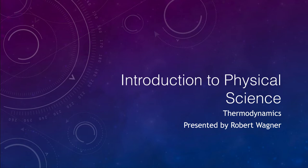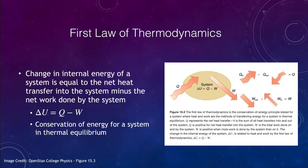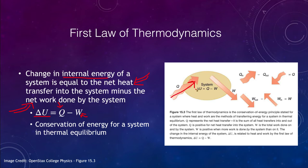Let's start with the first law of thermodynamics, which tells us that the change in internal energy of a system is equal to a combination of two things: the net heat transfer into the system minus the net work done on the system. So delta U, which is the change in internal energy, equals the net heat transfer minus the net work done on the system.